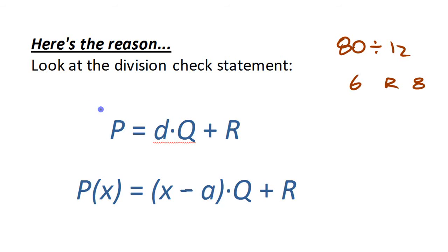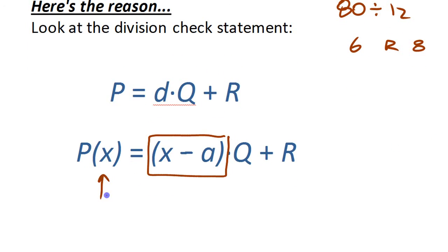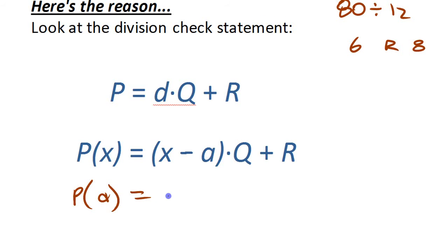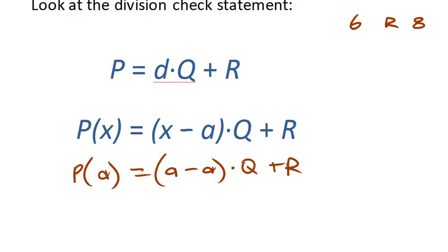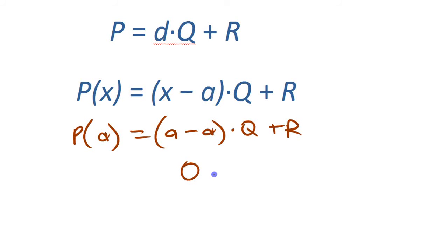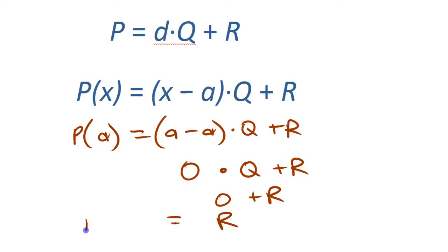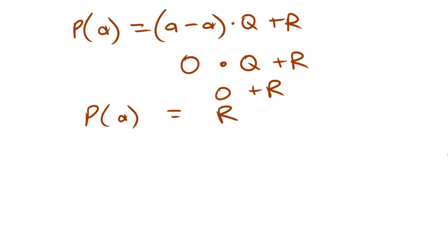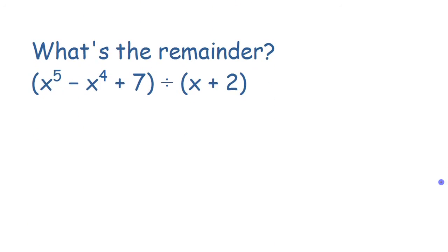If we're dividing by x minus a and we substitute a into the polynomial on both sides, we get p(a) equals (a minus a) times the quotient plus the remainder. That (a minus a) is zero, so zero times the quotient is zero — and this side is just the remainder. Therefore p(a) is the remainder. That value you get when you substitute in the root of the divisor is the remainder. Important concept.